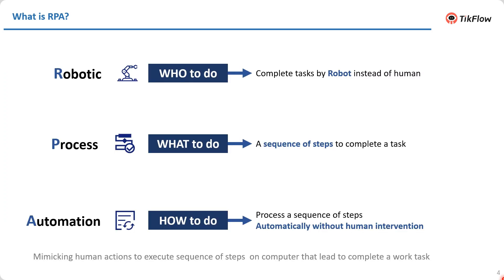Now we are looking into three aspects to help us understand how RPA is composed of. Robotic is what I like to call 'who to do' — complete tasks by robot instead of human. The second word, process — 'what to do' — a sequence of steps to complete a task.